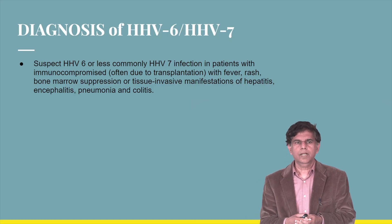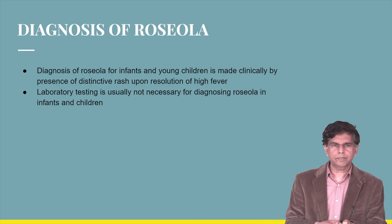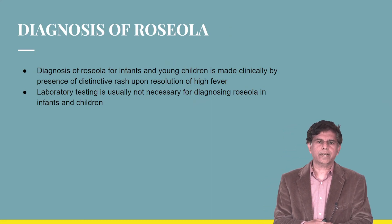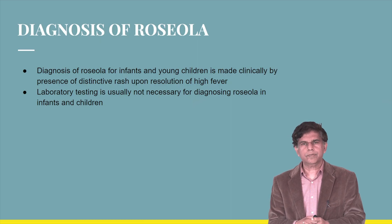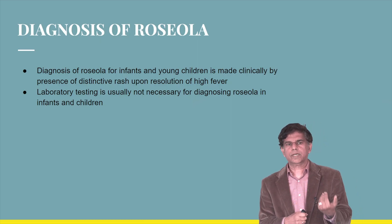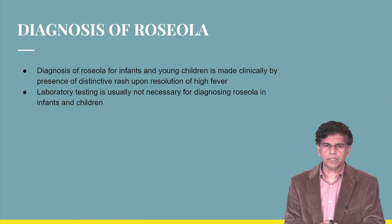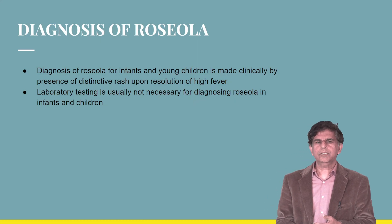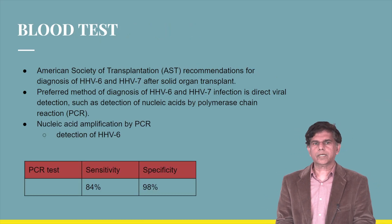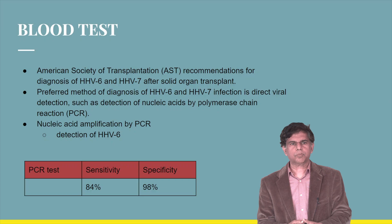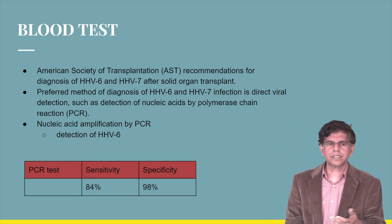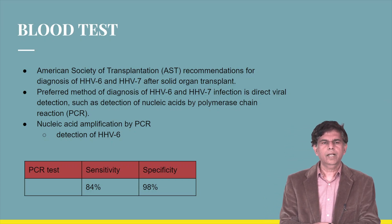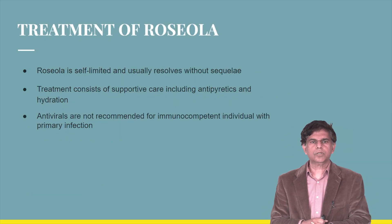For Roseola in infants and young children, diagnosis is clinical — based on the distinctive rash appearing upon resolution of high fever. Laboratory testing is generally not needed. However, in solid organ transplant patients, you can do blood tests including PCR, which has a sensitivity of about 84% and a specificity of about 98%.